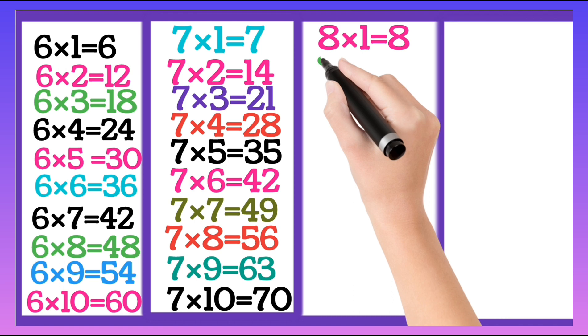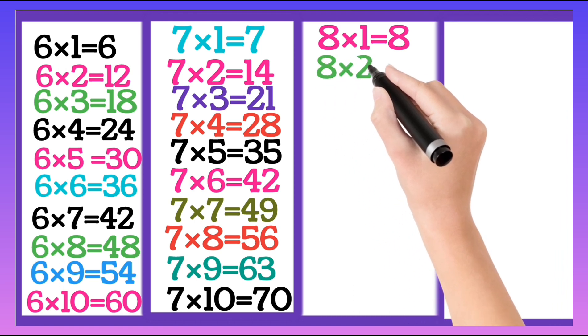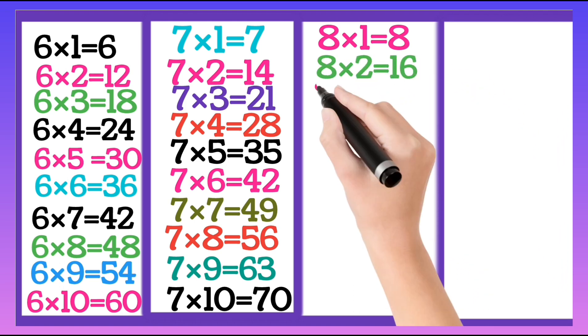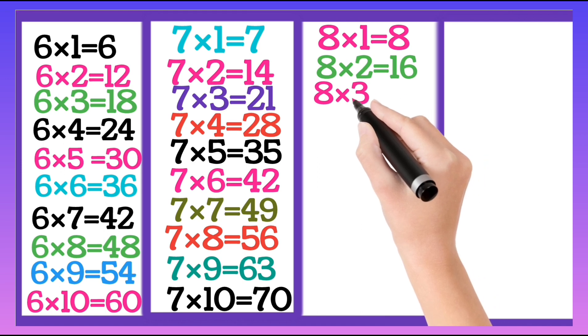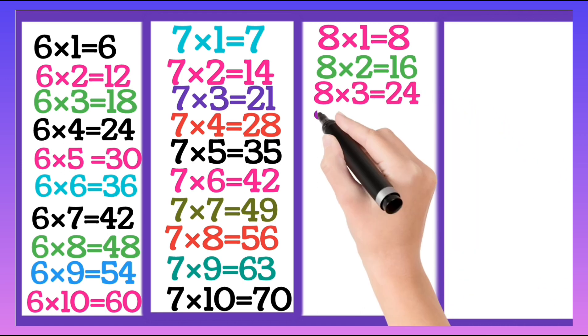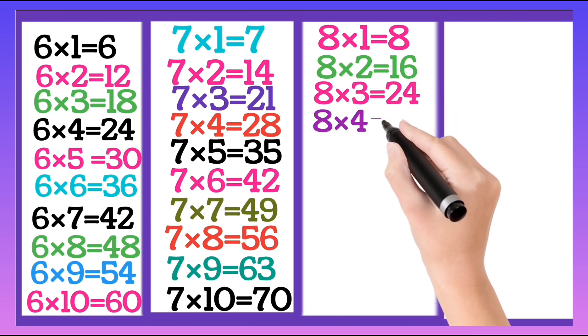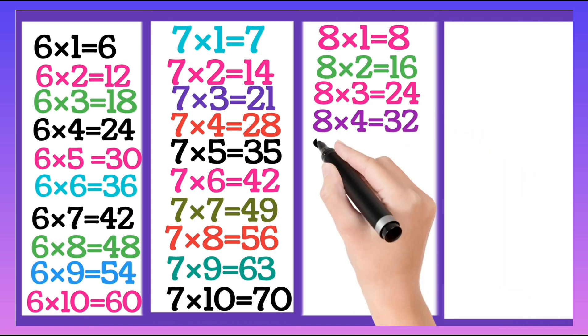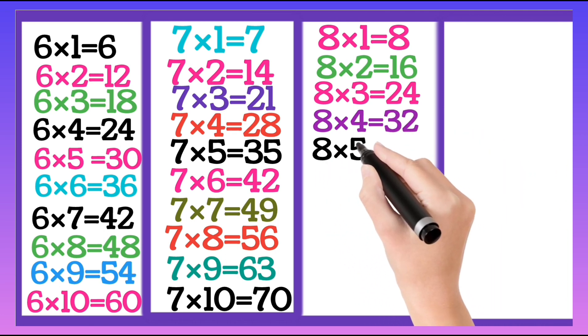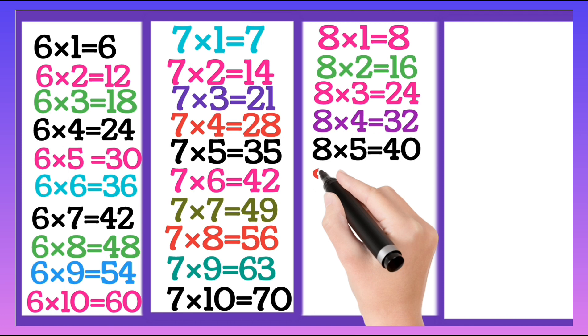8 ones are 8, 8 twos are 16, 8 threes are 24, 8 fours are 32, 8 fives are 40.